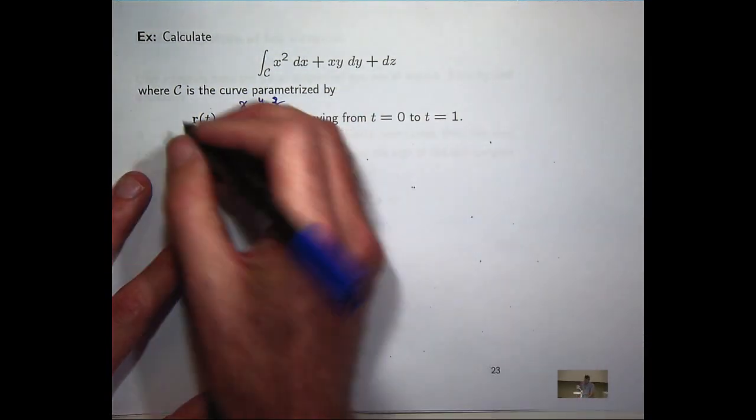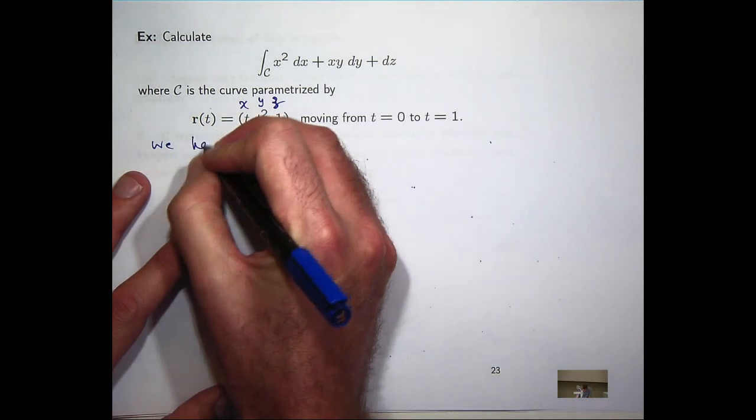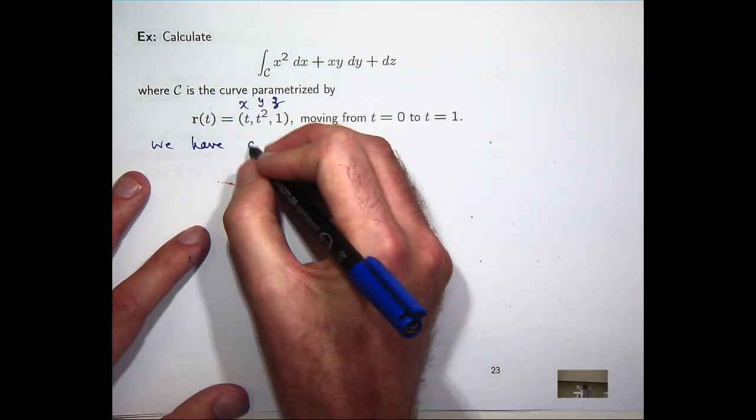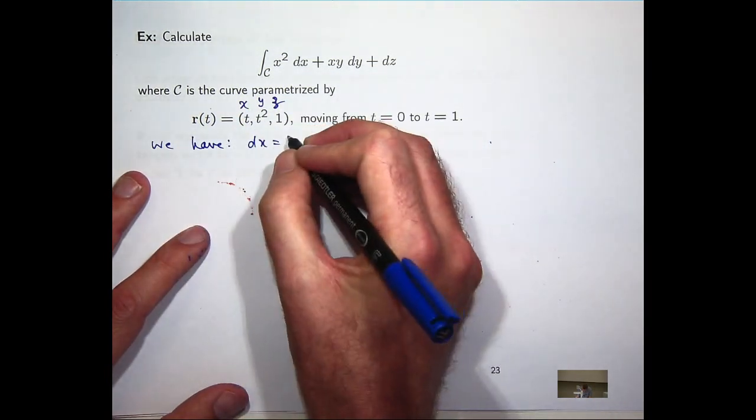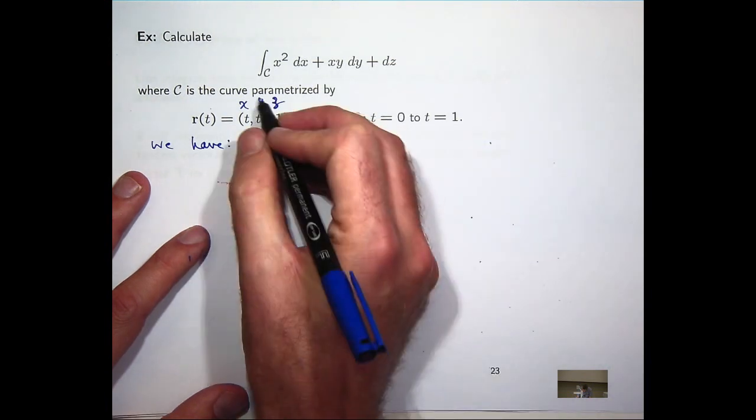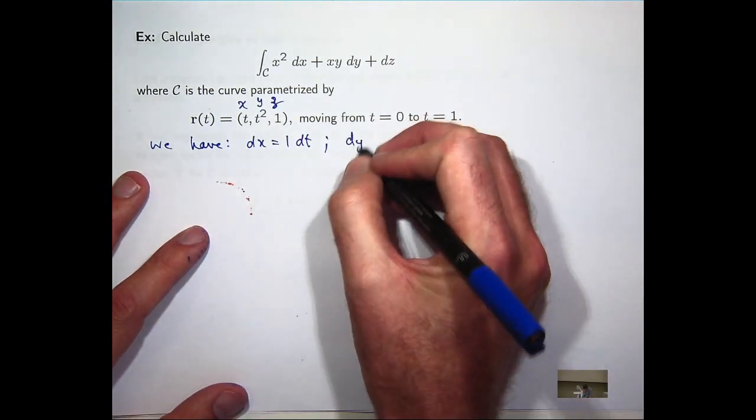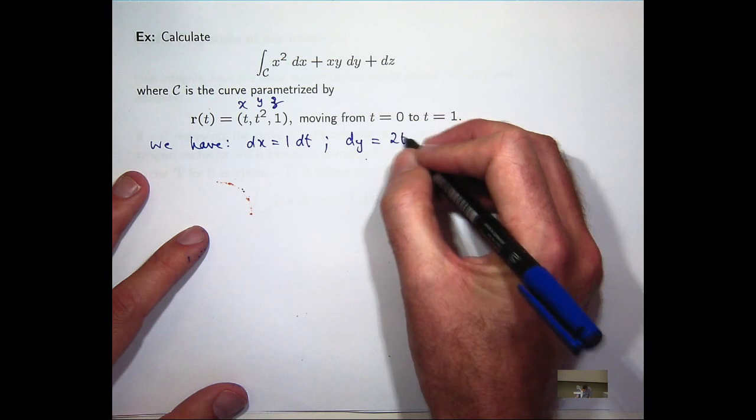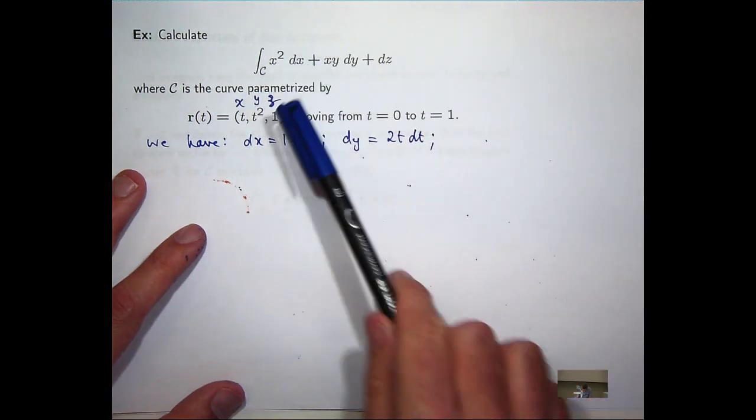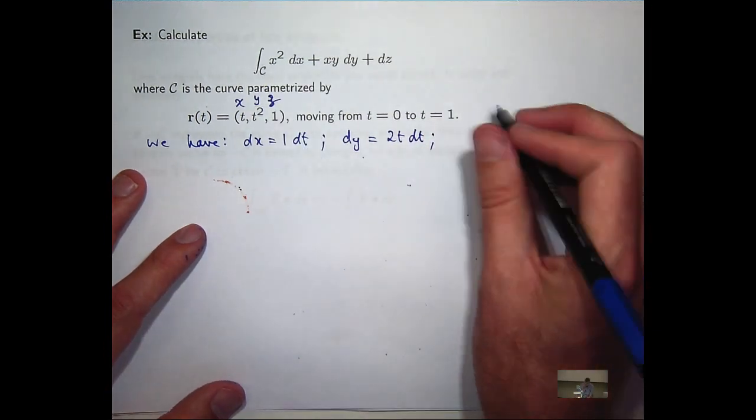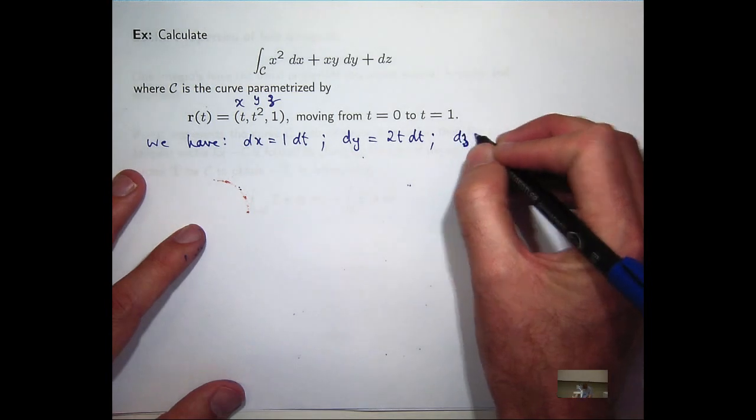So if x equals t, dx is just 1 dt. If y equals t squared, dy equals 2t dt. And if z equals 1, dz is just going to be 0 dt.